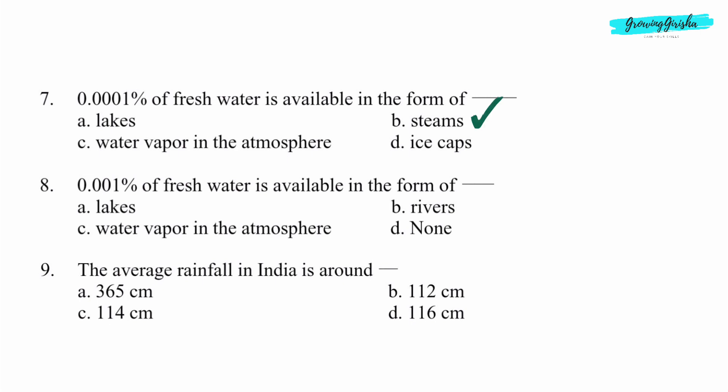Question 8. 0.001% of fresh water is available in the form of dash. Option C: Water vapor in the atmosphere.